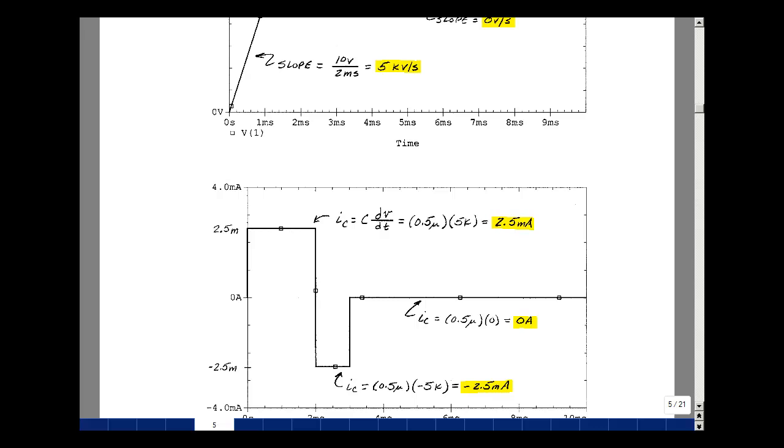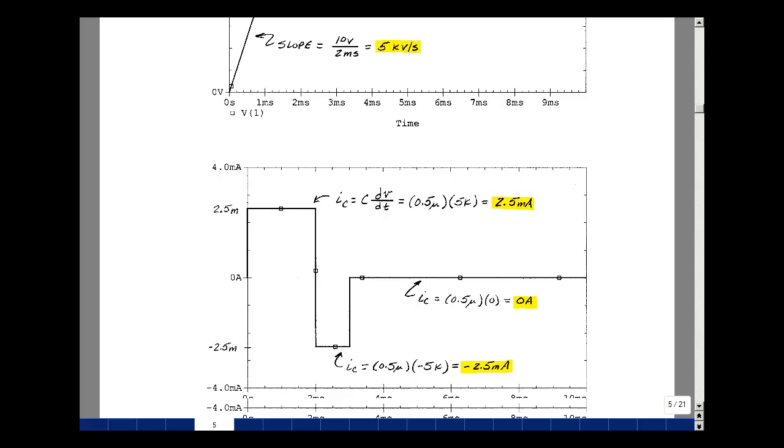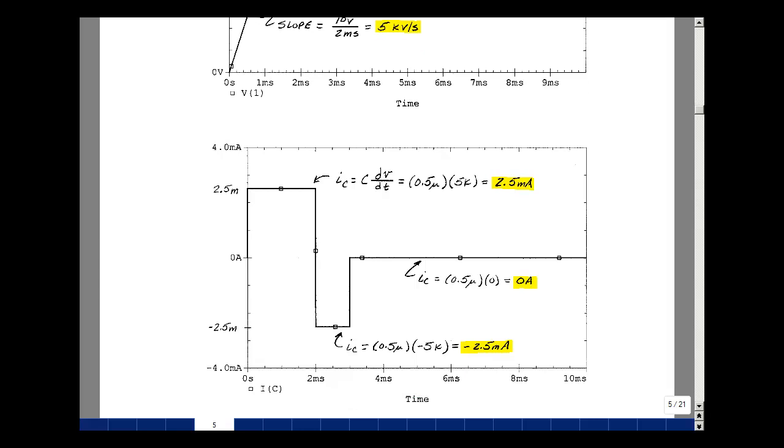For this first slope I would expect to see that slope of 5,000 volts per second times 0.5 microfarads and it gives me two and a half milliamps and then for the next slope where it's negative a minus two and a half milliamps and then when the slope is zero zero. So when I ask for the current in the capacitance, Spice gave me this graph and indeed it does turn out to be two and a half milliamps minus two and a half milliamps and then zero.